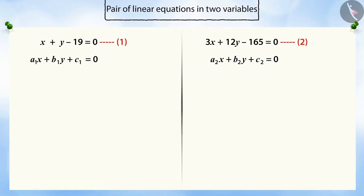So, if we look at these two equations, these include a1 is equal to 1, b1 is 1 and c1 is minus 19, and a2 is equal to 3, b2 is 12 and c2 is minus 165.